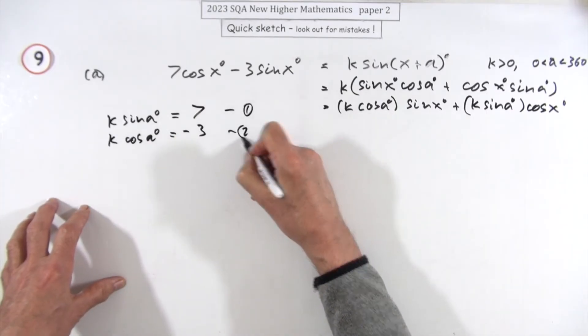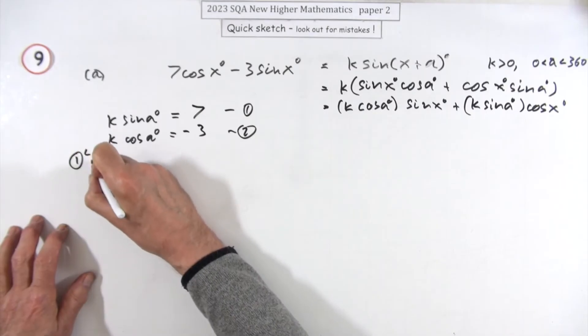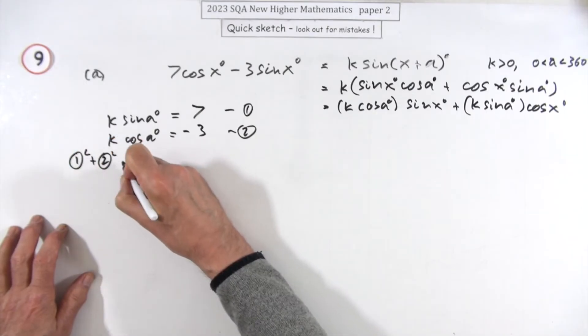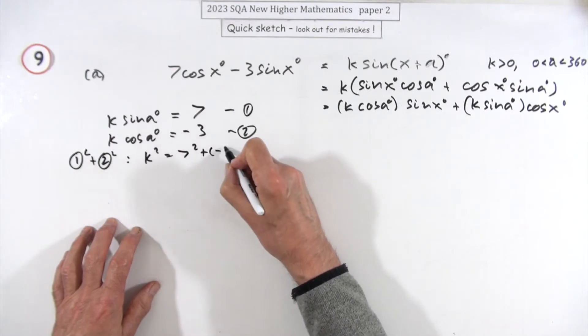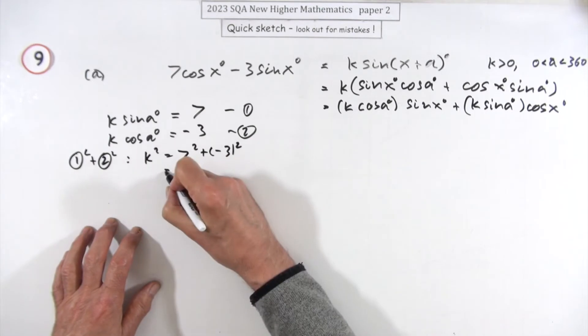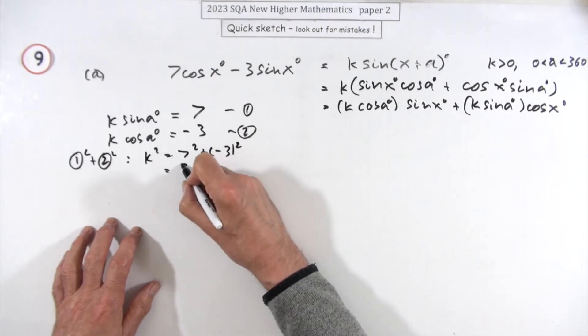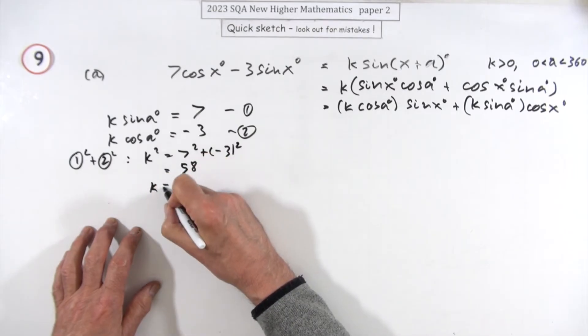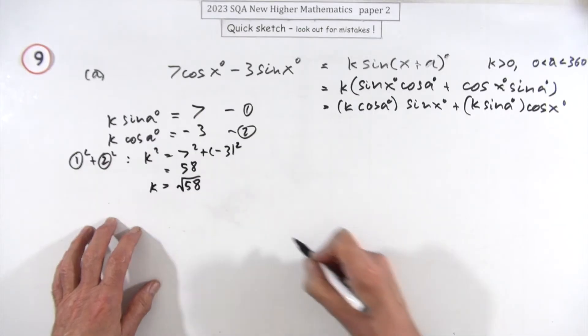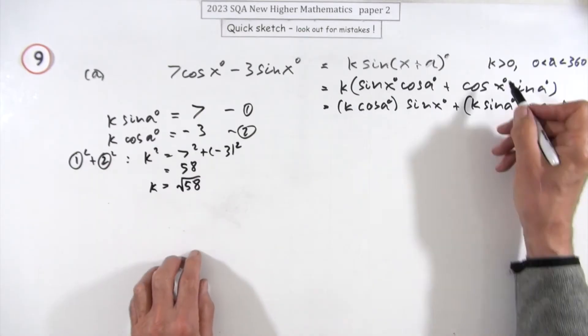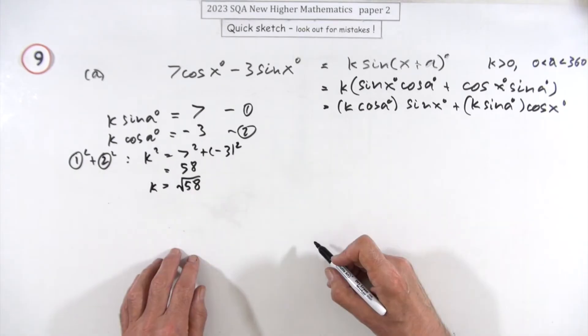A pair of simultaneous equations. Squaring and adding, sin² and cos² makes 1, so you've got k² will be 7² plus (-3)², that's 49 and 9, is 58. So k is going to be the square root of that, which is just root 58, and it's meant to be positive.